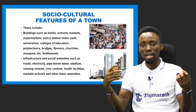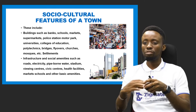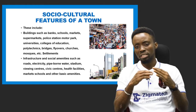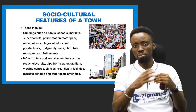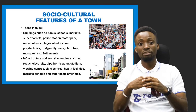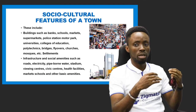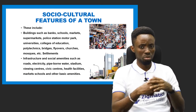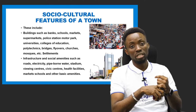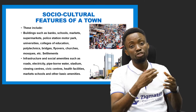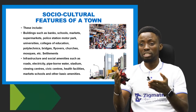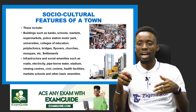The human or man-made features you can see in a town are quite different from the village in terms of complexity. In a town we have large buildings like commercial banks and mortgage banks, schools including universities, colleges of education, and polytechnics, supermarkets, police stations, flyovers, churches, mosques, and different types of settlements — far more than what we find in a village.